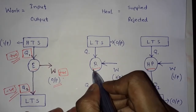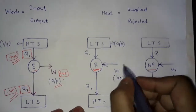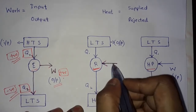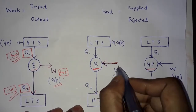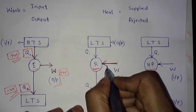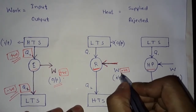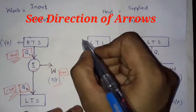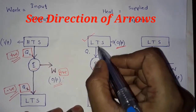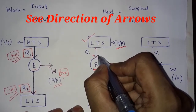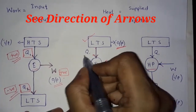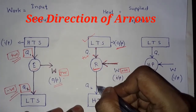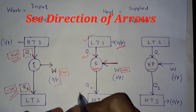Now see the example of a refrigerator. Here we apply work on the system — that is, work done on the system — so this arrow shows work done on the system, making it a negative quantity. In the refrigerator, the output is low temperature in the refrigerator space. Heat is supplied to the refrigerator — positive quantity — and heat rejected from the system is a negative quantity.